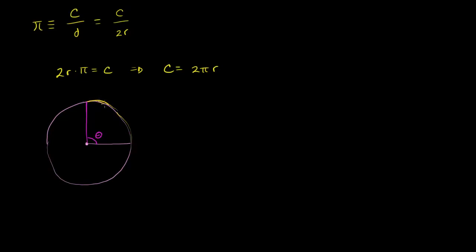This arc length right here — if the radius is r, what is the length of this arc length? We know from basic geometry the entire circumference is going to be 2 pi r. Assuming this is a fourth of the circle, the arc length is going to be 2 pi r over 4, which is the same thing as pi over 2 times r.